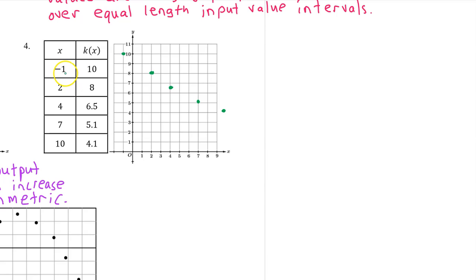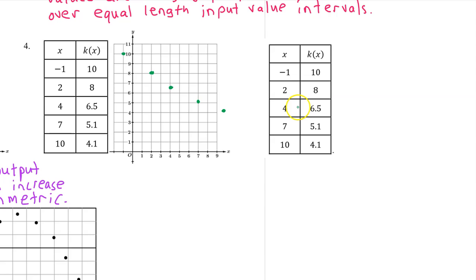Here's the scatterplot for number four. It was looking roughly linear until it got to the last two values. Now I'm thinking an exponential model might be more appropriate. Let's check to see if the output values are roughly proportional for equal length input value intervals. Three of the four input value intervals have length 3, so let's focus on these three intervals. 8 divided by 10 is 0.8, so that's the first ratio.